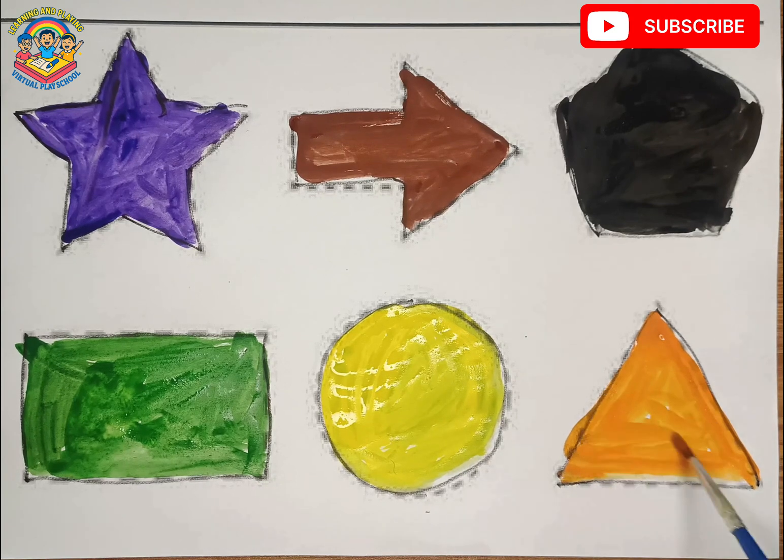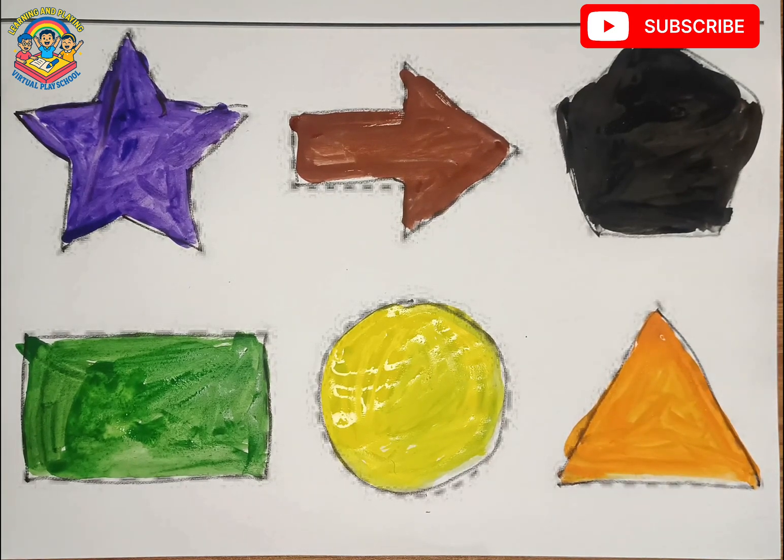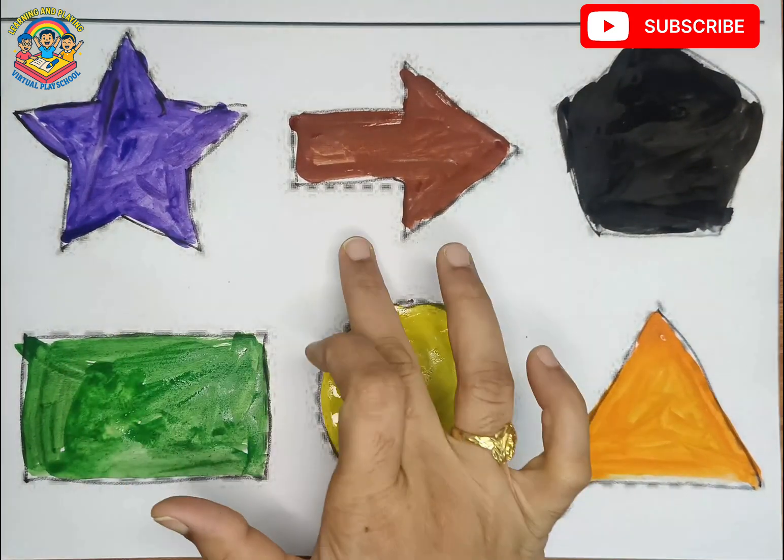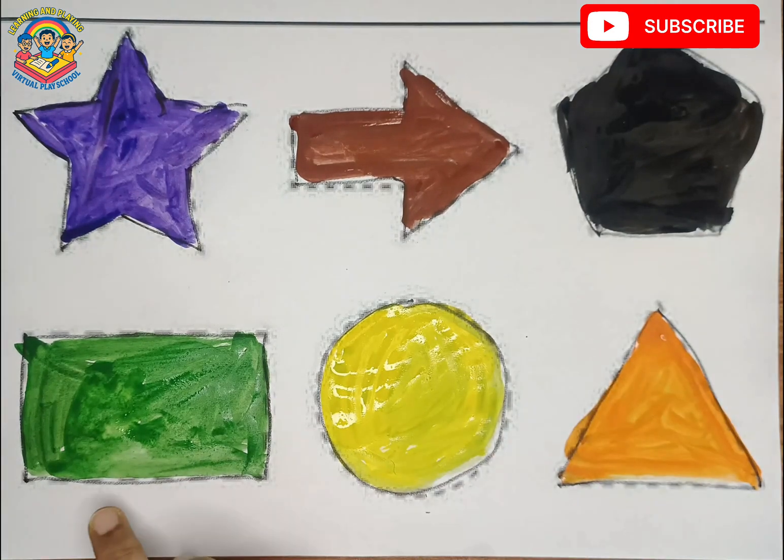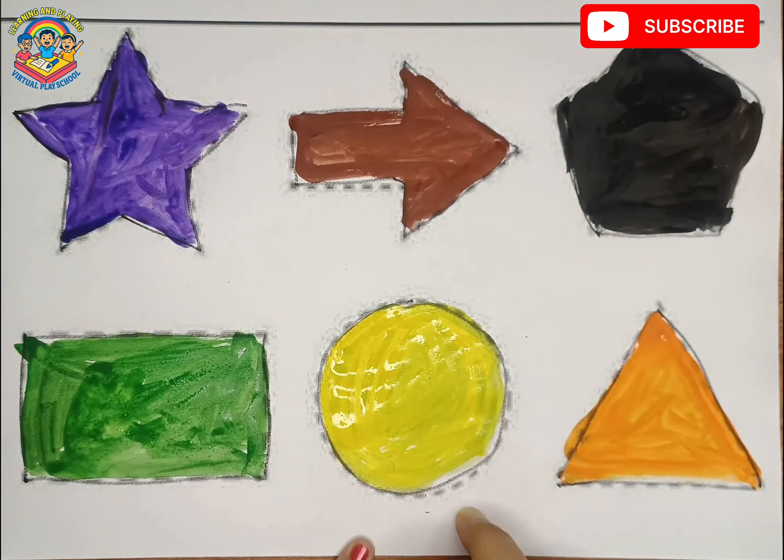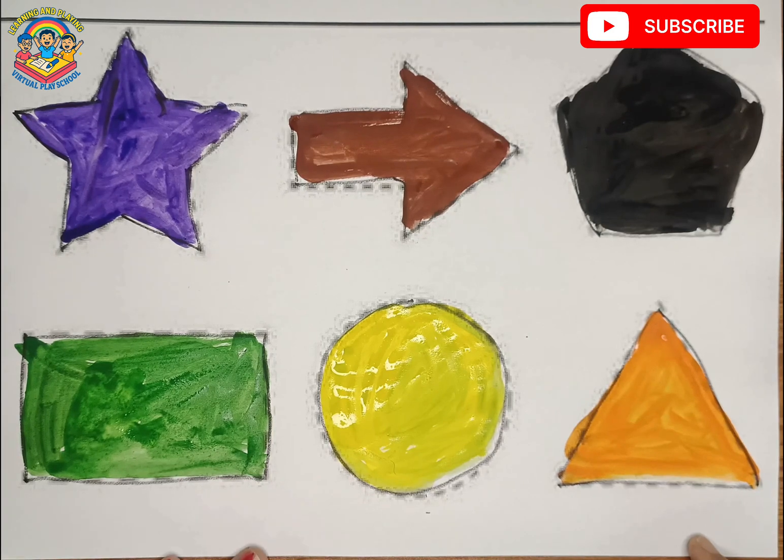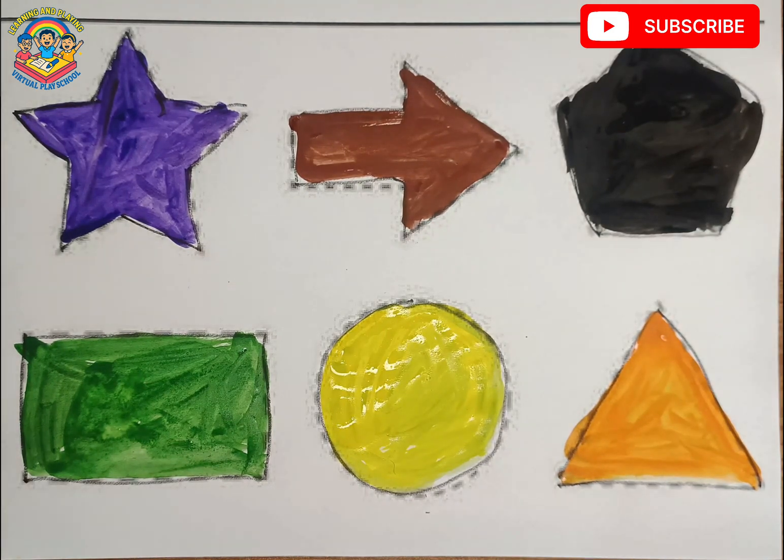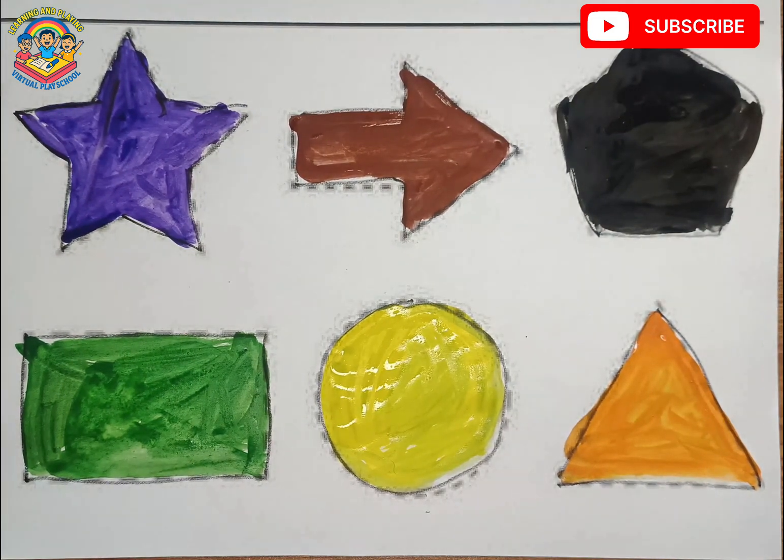Let's revise. Star, arrow, pentagon, rectangle, circle, triangle. Okay kids, please like, share, and subscribe. See you in the next video.